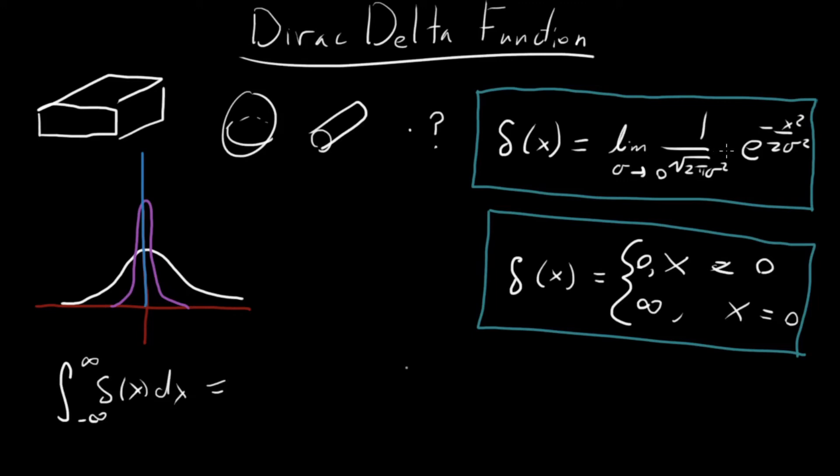Well, let's say we want to integrate just delta of x from minus infinity to infinity. Well, this is just a Gaussian. I mean, it's a limit of a Gaussian, but it has the same properties of a Gaussian. And one of those properties is that it's normalized. So if we integrate over this whole thing, we get one.